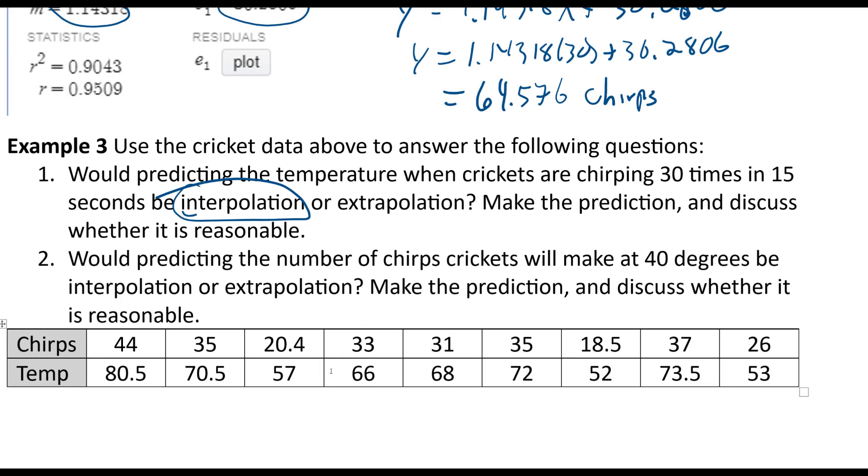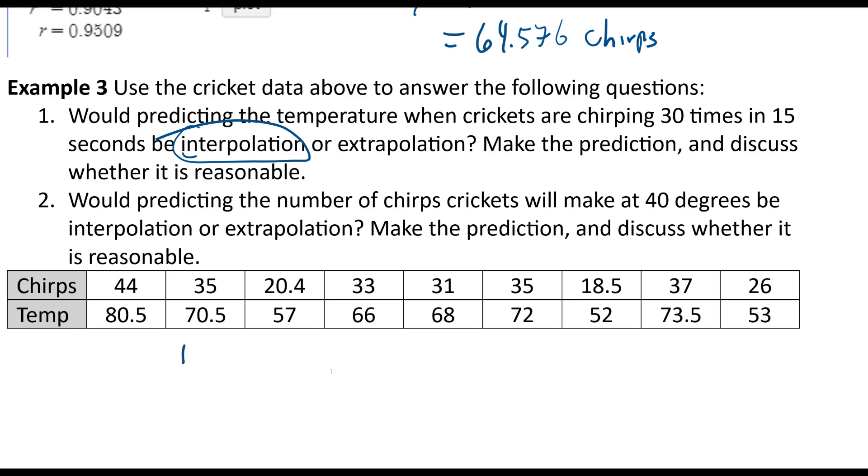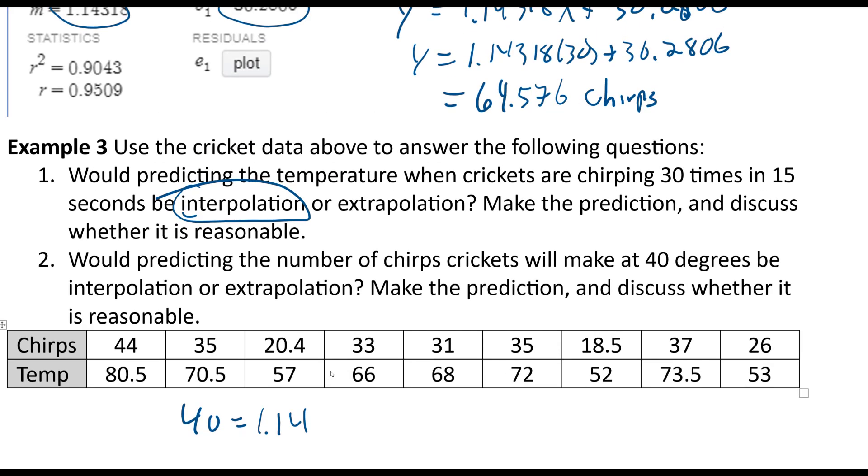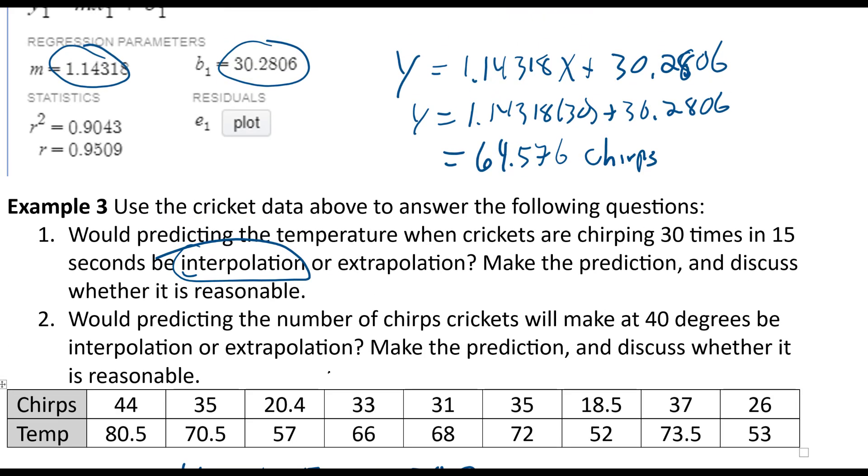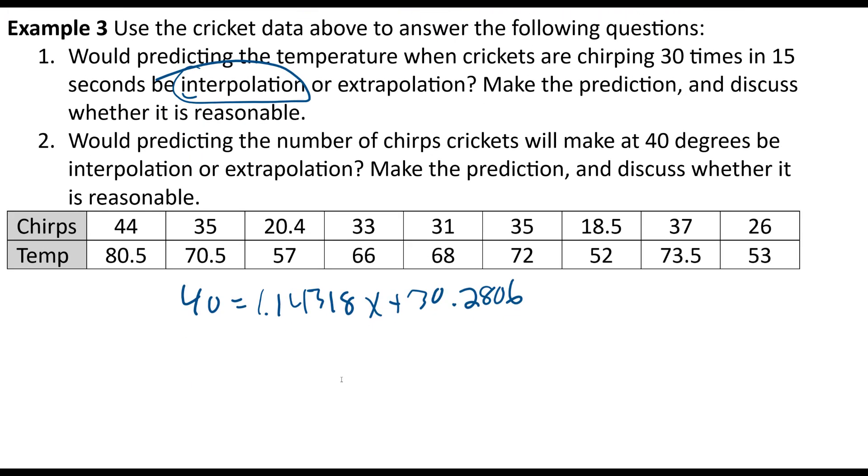We can do the calculation though. So if I need to take that number, it's going to be 40 equals 1.14318 X plus 30.2806. And we solve for X. So I'll subtract the 30.2806 from both sides.